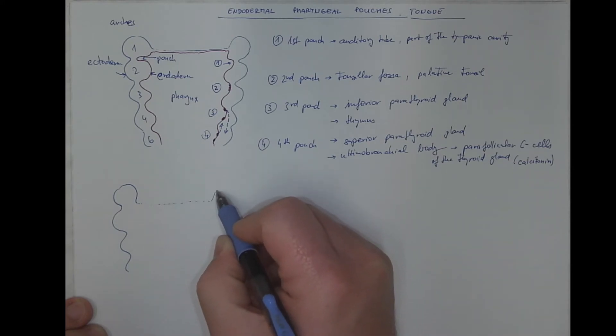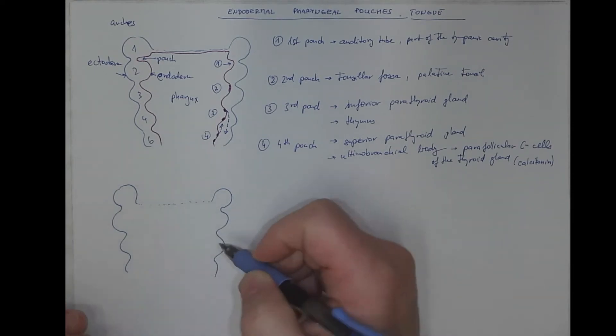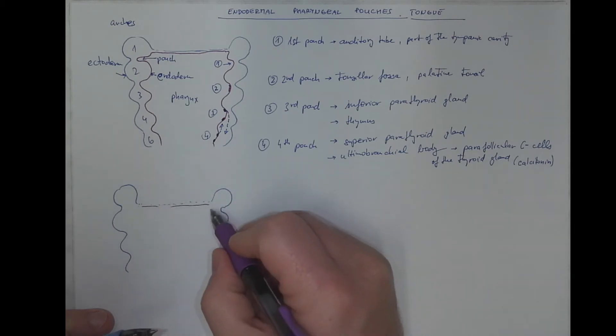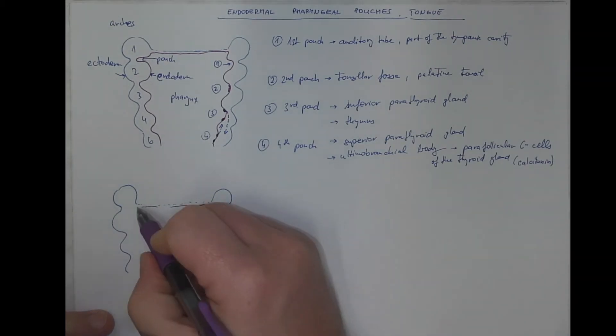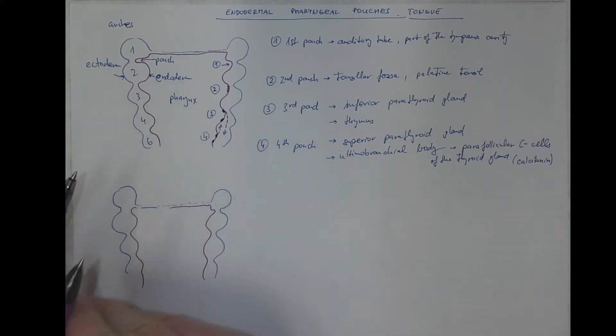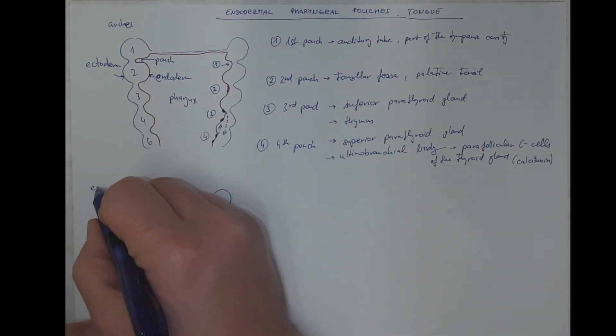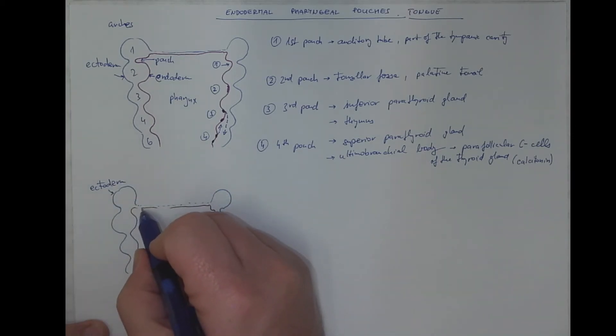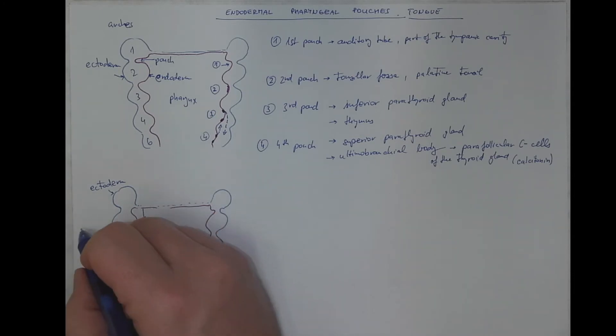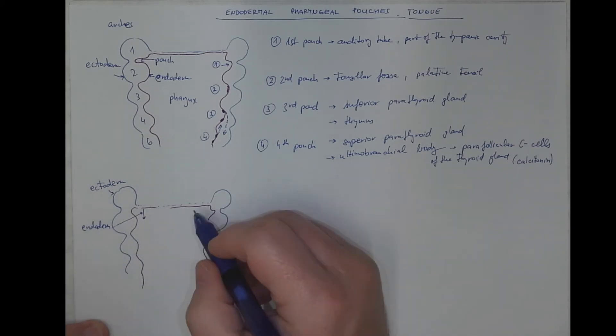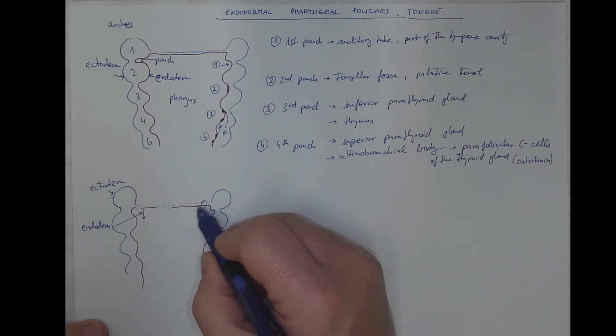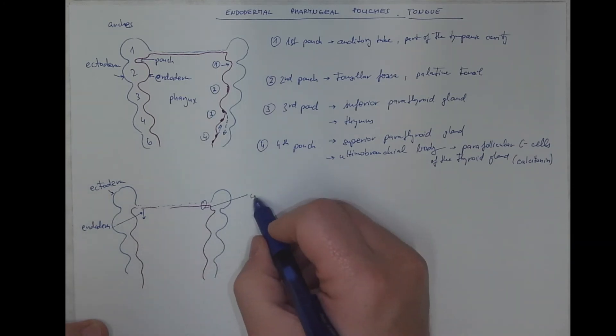And what is in front of the oropharyngeal membrane will be the ectoderm. What is inside will be the endoderm. We already understand that. So, this is the ectoderm. Drawn in blue. And this will be the endoderm. And this is the barrier between ectoderm and endoderm, the oropharyngeal membrane.